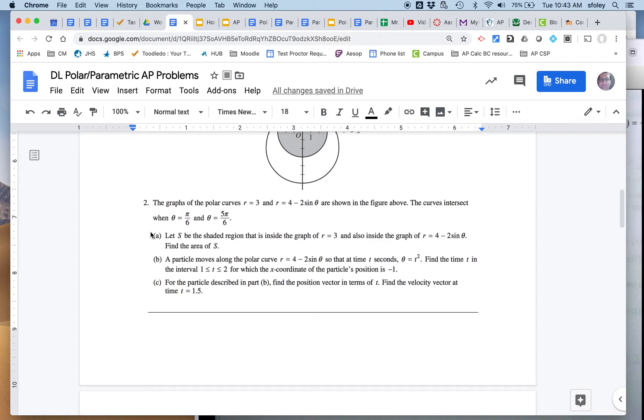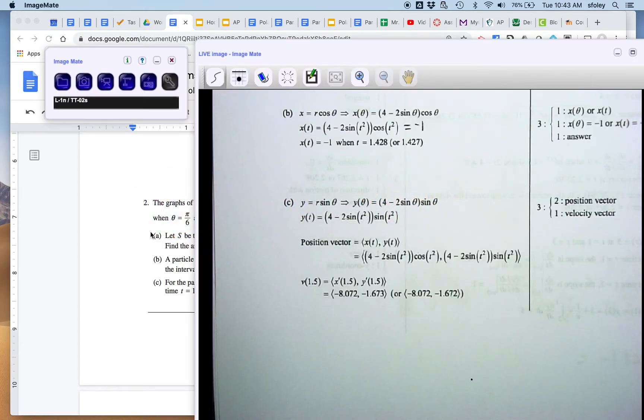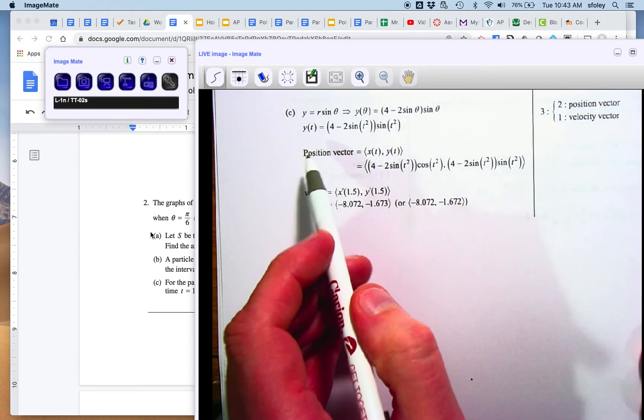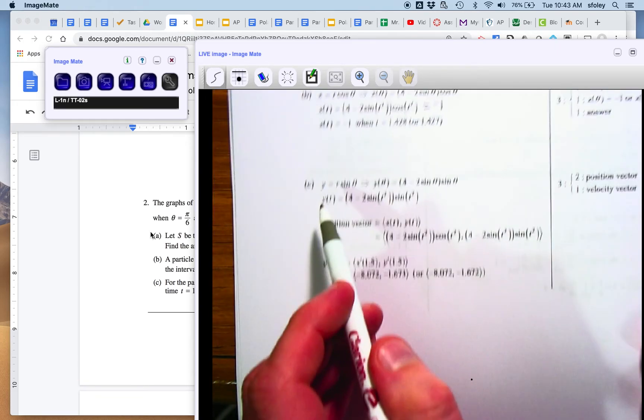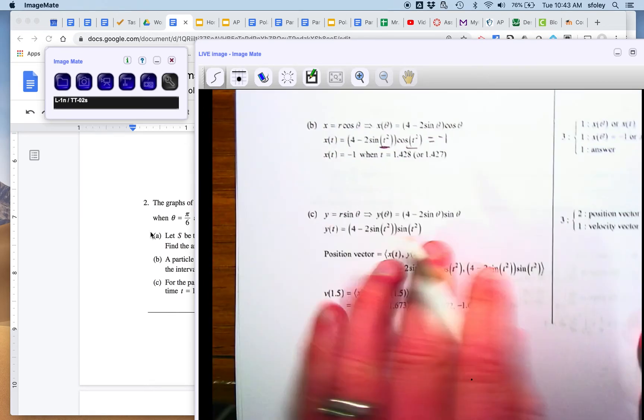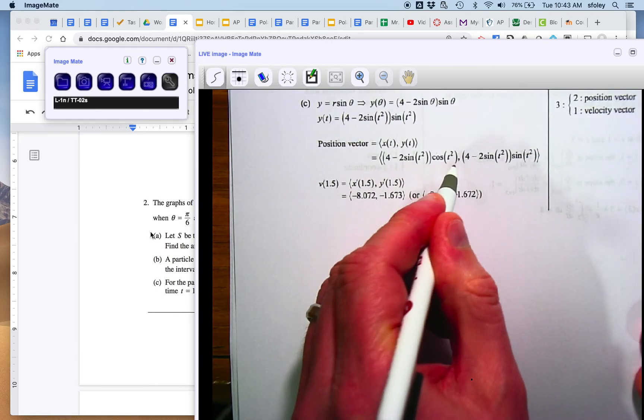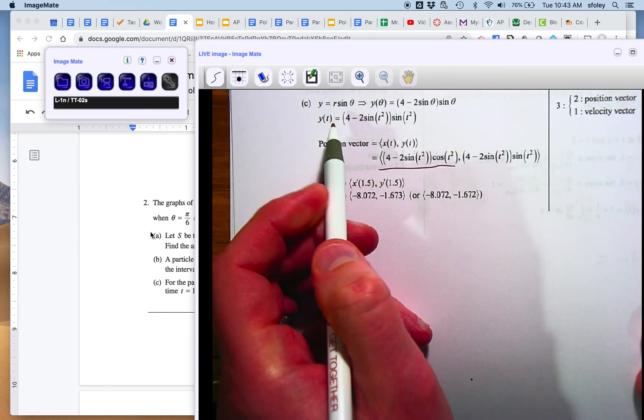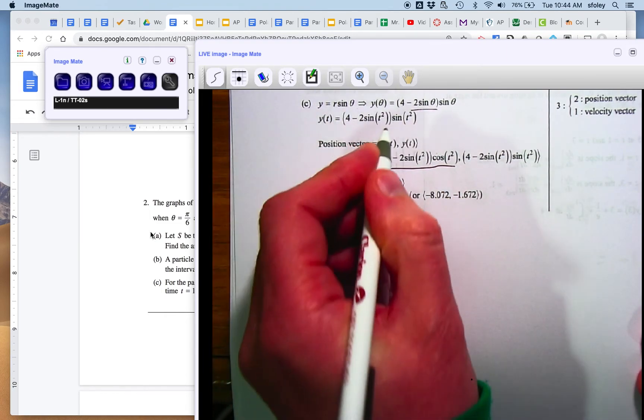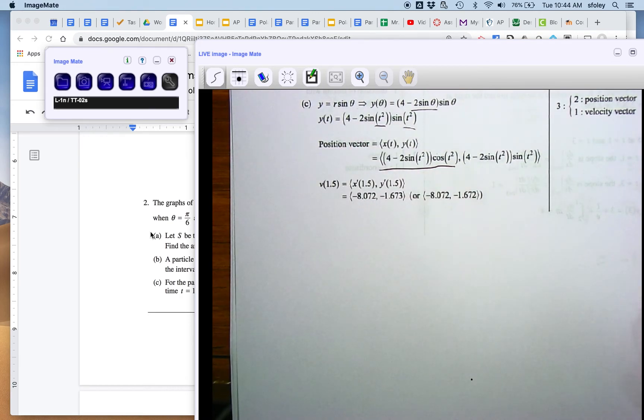Last one, find the position vector in terms of t. Find the velocity vector at a certain point. And so the position vector, that's going to be x, y. And so we already did, up above, we did the x equation. So we did x equals r cosine theta, replace theta with t squared. And so we're basically just copying that down here. Y will be very similar, except it's r sine theta. And so we replace r with that equation, replace theta with t squared. And then we're good to go.